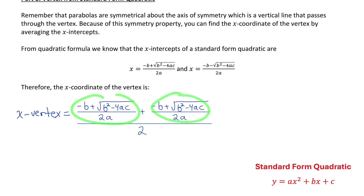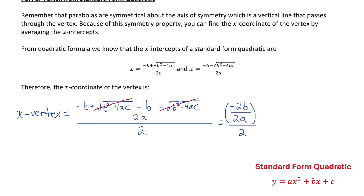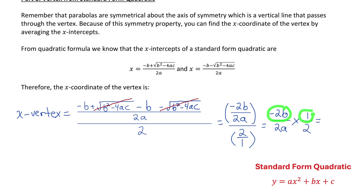Notice that both x-intercepts have a common denominator of 2a, so I can rewrite the sum of those two fractions as a single fraction over the common denominator of 2a. The positive square root of b squared minus 4ac and the negative square root cancel out, leaving negative b minus another b, which gives me negative 2b. So I have negative 2b over 2a divided by 2. Multiplying by the reciprocal gives negative 2b over 4a, which simplifies to negative b over 2a — the final equation for the x-coordinate of the vertex.